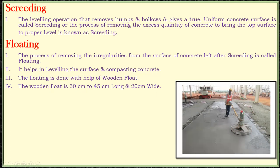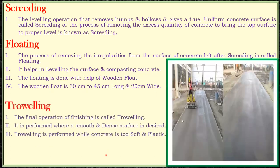The last operation is troweling. The final operation of finishing is called troweling — it is performed where a smooth and dense concrete surface is desired. Troweling is performed while the concrete is still soft and plastic. Once floating is done, you run the troweling machine over the surface and get a very good surface finish. This is usually done in pavement construction and industrial structures. For normal slab work, we don't go with the troweling activity — it is specially done where a very good, shiny surface is required.